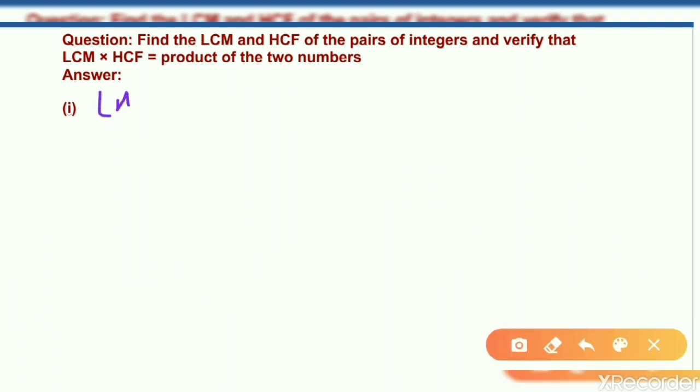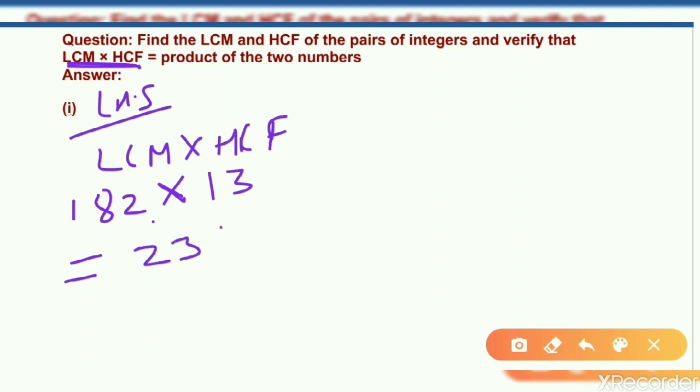Come to the verification part. Left hand side. And left hand side is what? LCM multiply HCF. And the value of LCM is 182 and HCF is 13. And after multiplication I get the result 2366.